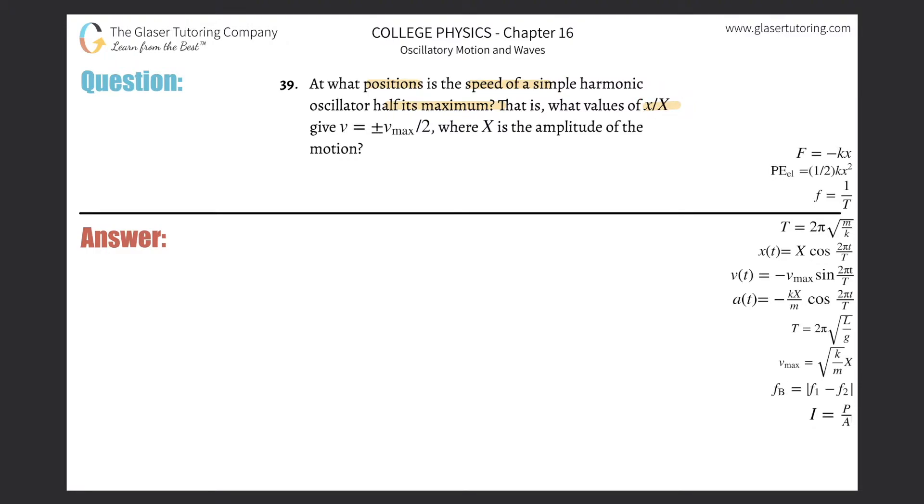I'm going to be using the formula right over here. It says that the v_max, the maximum velocity, will be equal to the square root of k divided by m times the maximum displacement, which is x, which is also the same thing as saying the amplitude. The amplitude is the maximum displacement.